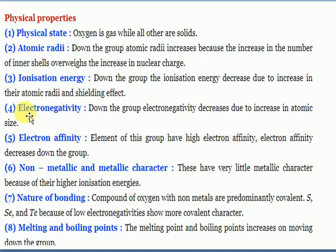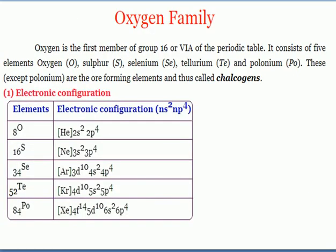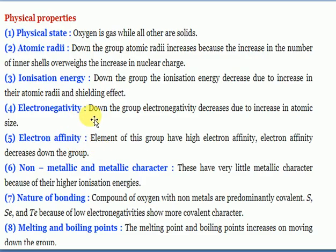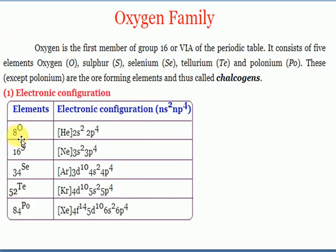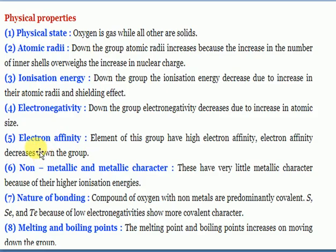Electronegativity is the tendency of an atom to attract electrons. Oxygen is a small atom, and after fluorine, oxygen is the most electronegative element in the periodic table. Electronegativity decreases down the group because as the number of shells increases, the screening effect prevents easy attraction of electrons. The order is: O > S > Se > Te > Po.